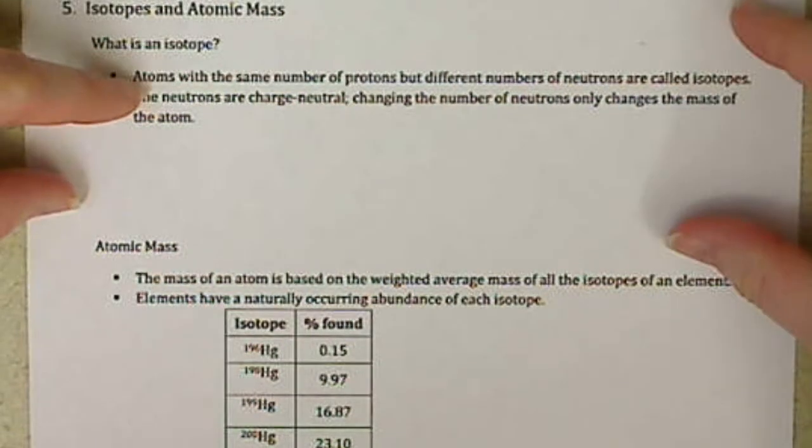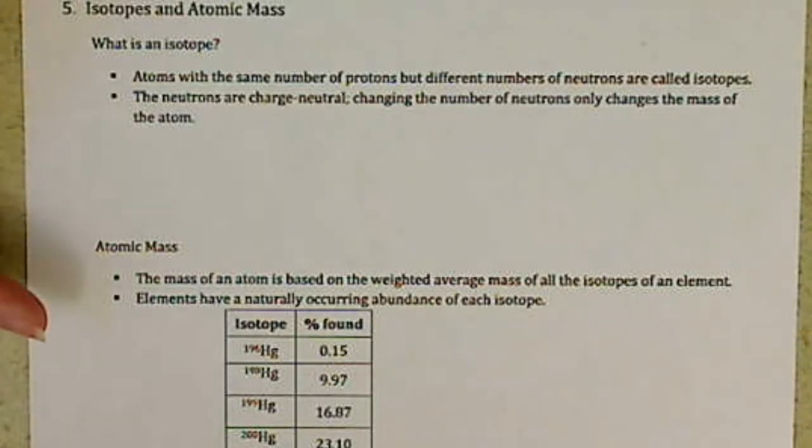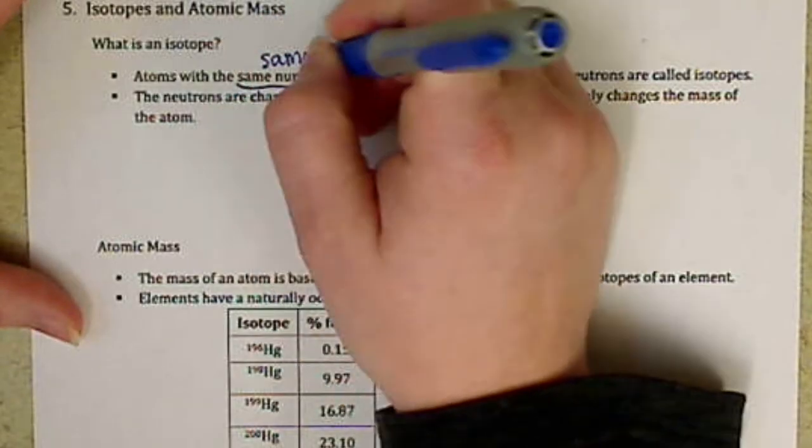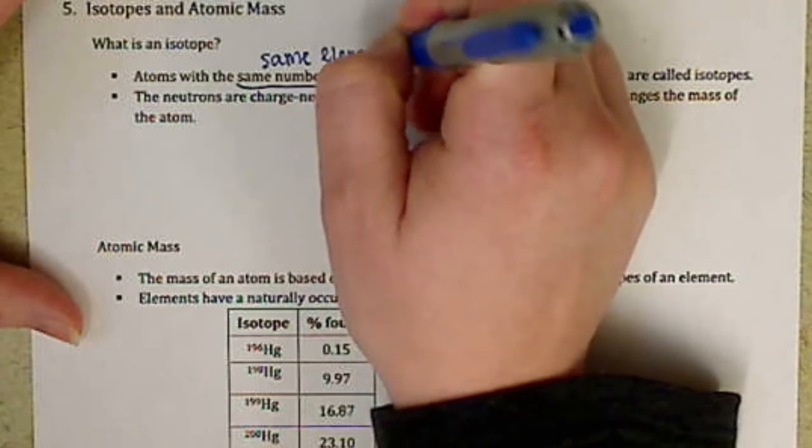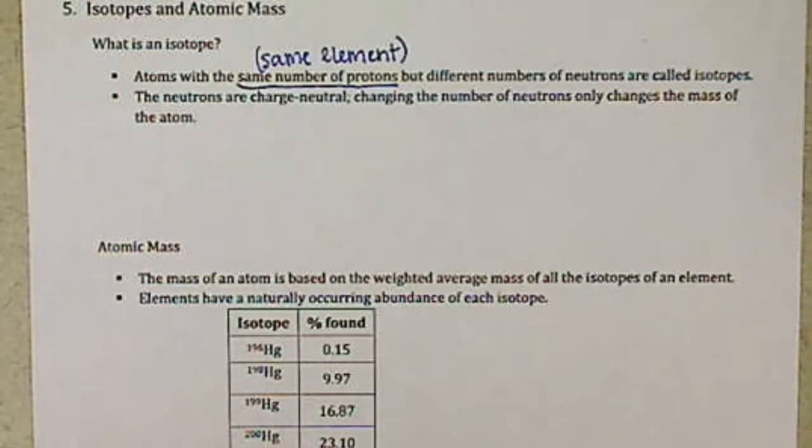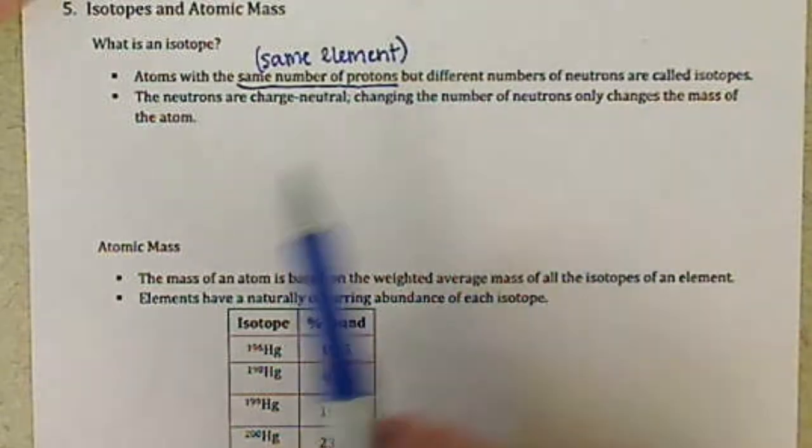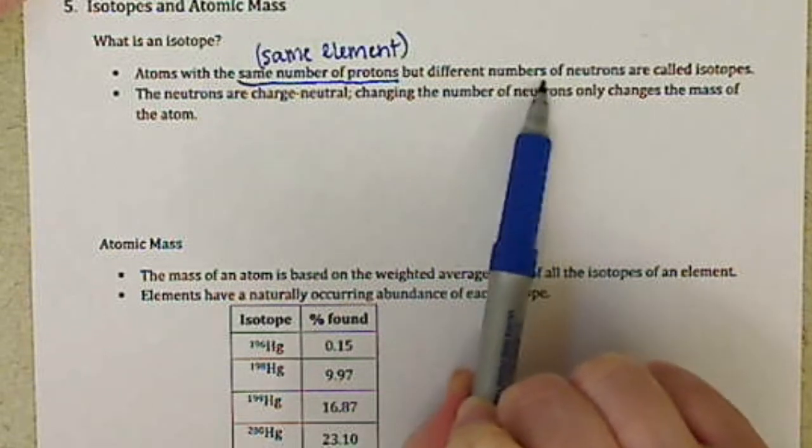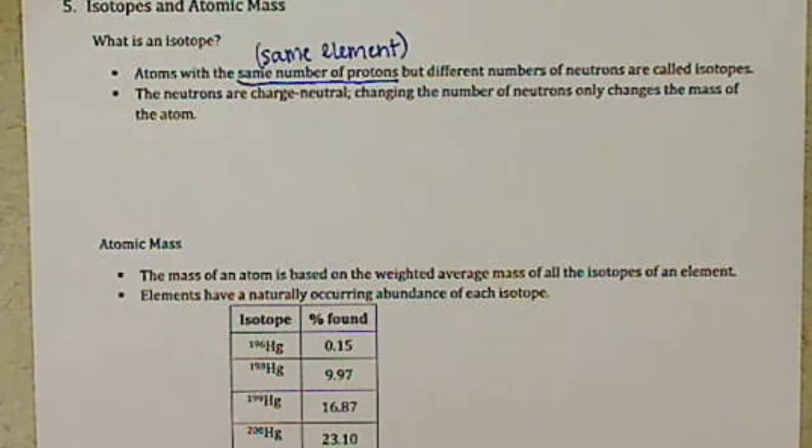So isotopes are atoms with the same number of protons, meaning they are the same element. Remember on the previous video, we learned that the number of protons dictate which element we're looking at, same as the atomic number. So atoms with the same number of protons, but they're going to have different number of neutrons. We call those isotopes. Remember I said you could not get the number of neutrons from the periodic table, and the reason for that is because we have isotopes.